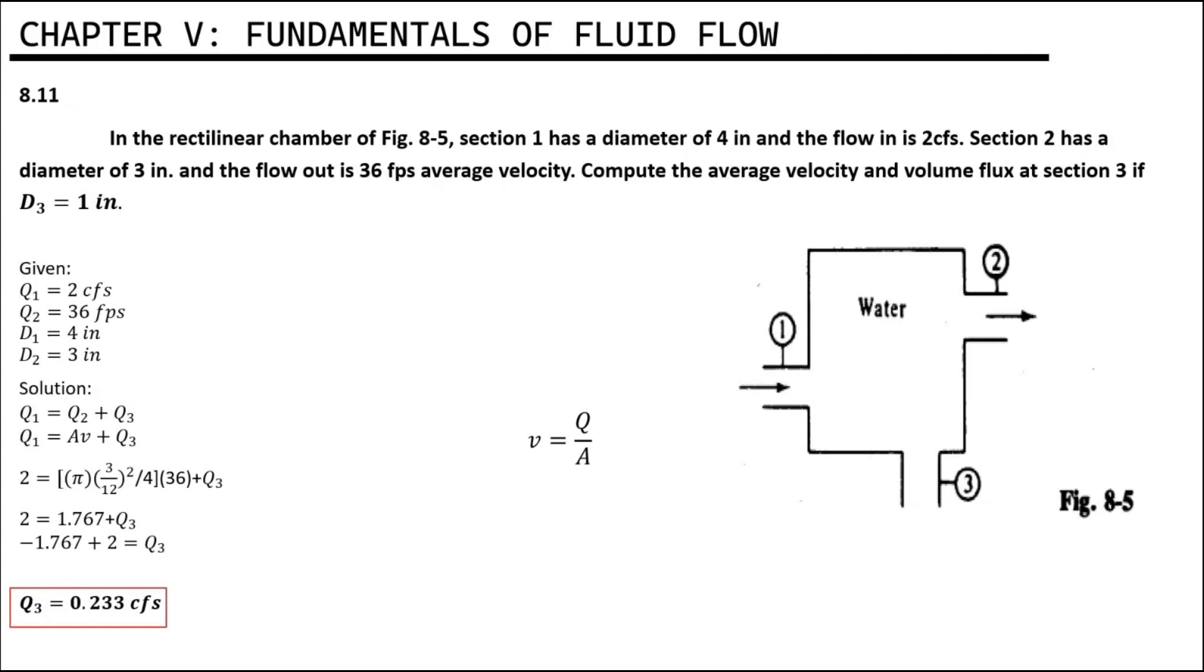Now we have the value for Q3, we can solve for the velocity. V equals Q over area. Plugging all the given values, we have 0.233 divided by pi times 3 over 12 squared divided by 4.